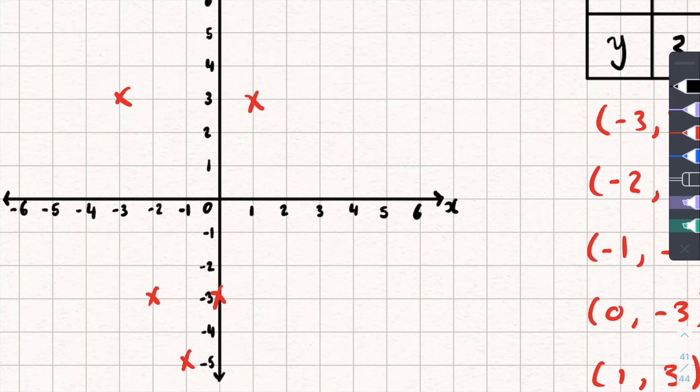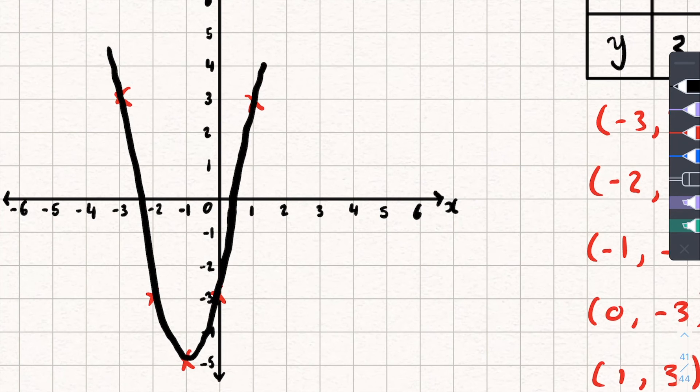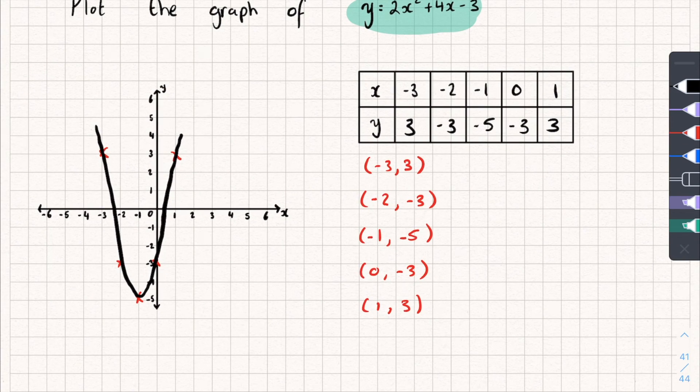So once again, this has kind of been squished together, but you can still see that U shape. So I'm going to draw one continuous line that goes through each of these points. There we go. Like that. And that's it. We've plotted that graph.